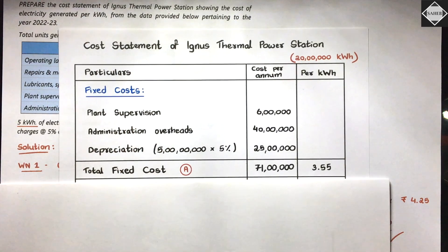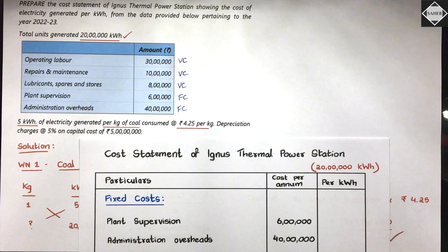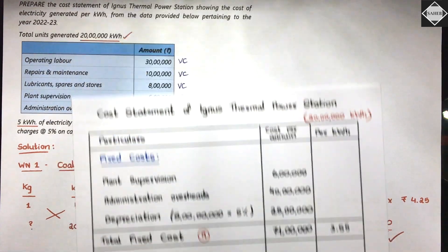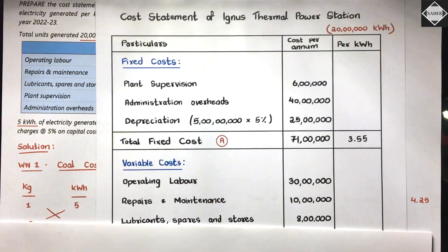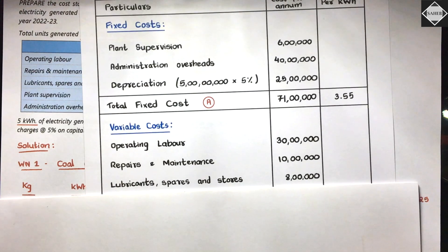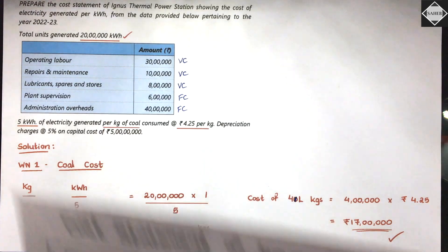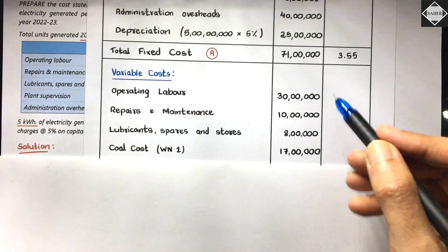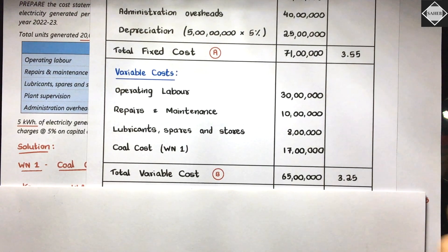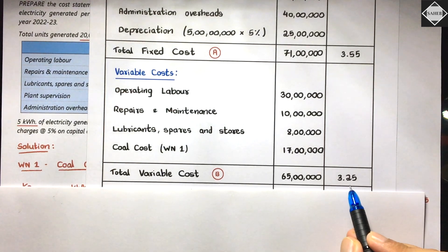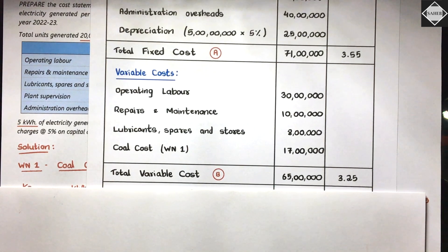Variable costs: Repairs and maintenance ₹10 lakhs, Operating labor ₹30 lakhs, Lubricants, spares and stores ₹8 lakhs, and Coal cost from Working Note 1: ₹17 lakhs. Total variable cost = ₹65 lakhs. Variable cost per unit = ₹65 lakhs ÷ 20 lakhs = ₹3.25 per unit.